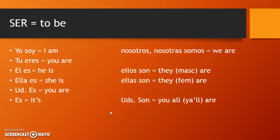So a quick review of the conjugations. We know: soy, eres, es, somos, son. I have it organized with singular subjects on the left: yo soy — I am; tú eres — you are; él es — he is; ella es — she is; usted es — you are. Remember tú is for friends, family, and young people, and usted is for older strangers and to show respect. We also use es by itself, meaning 'it's' — it's nice, it's hot, it's hers. Nosotros and nosotras: somos — we are. Ellos son — they are, masculine. Ellas son — they are, feminine. And ustedes son — you all are. Make sure you memorize those: soy, eres, es, somos, son.